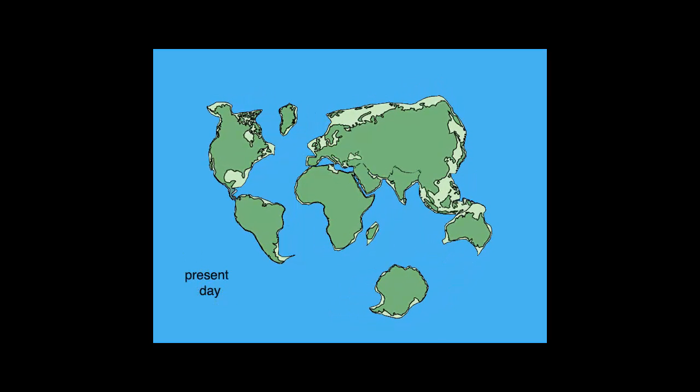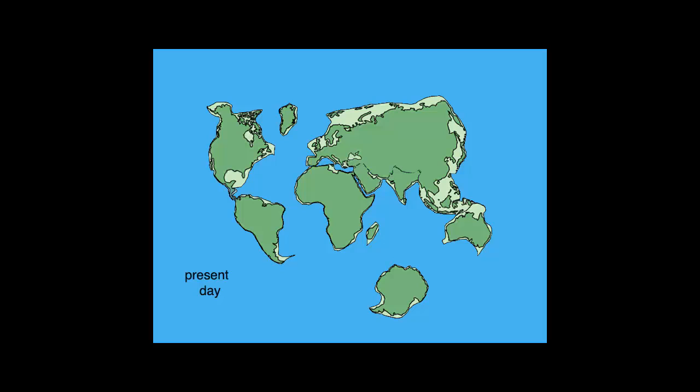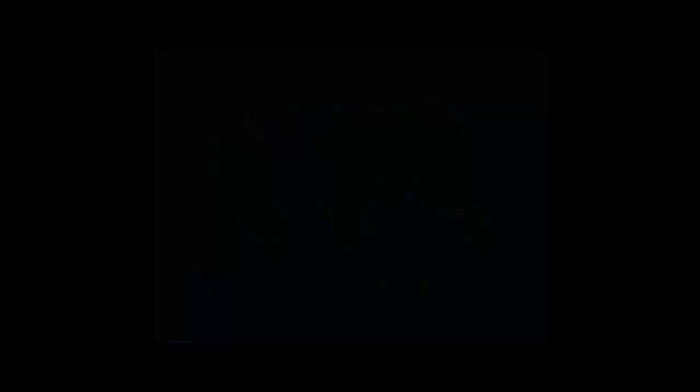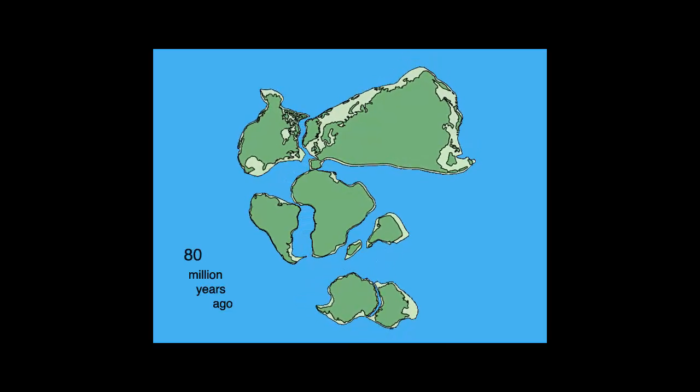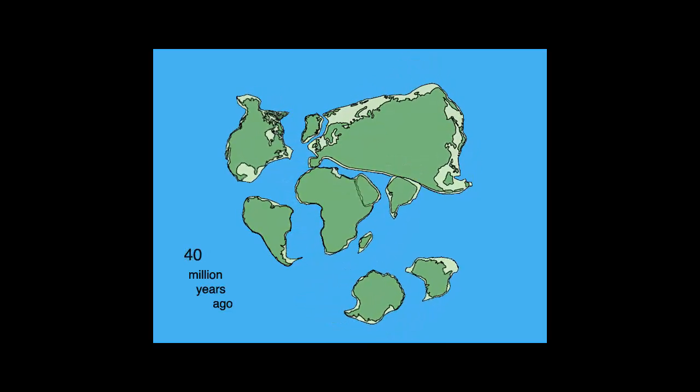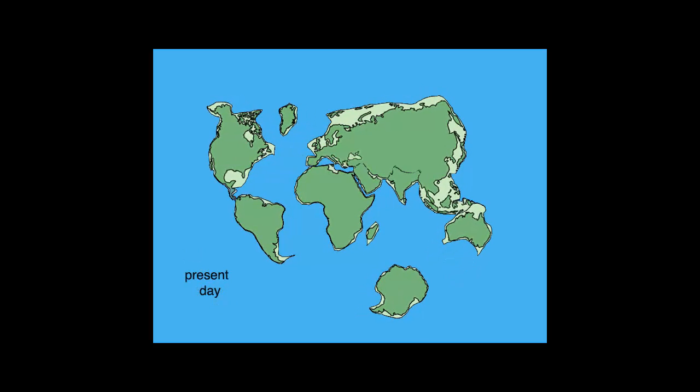He believed that about 300 million years ago, Pangea began to break apart and the pieces drifted to their present location. Although Wegener's theory was supported by the shapes of the continents, he was unable to explain why they were moving.